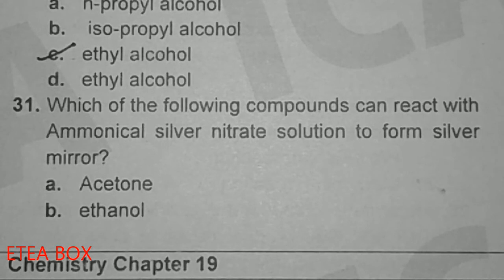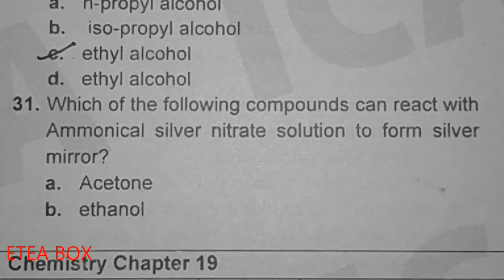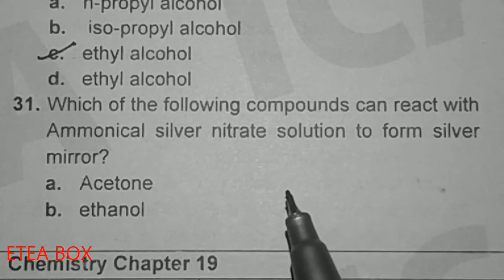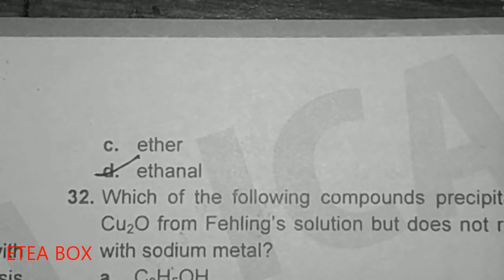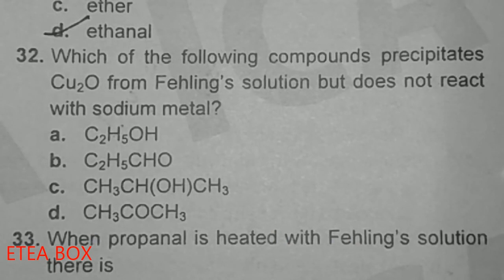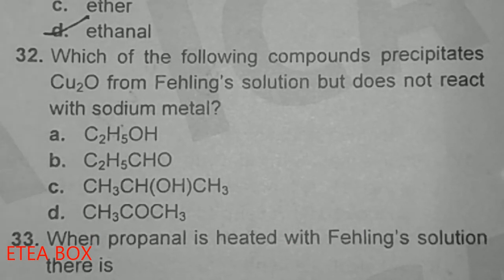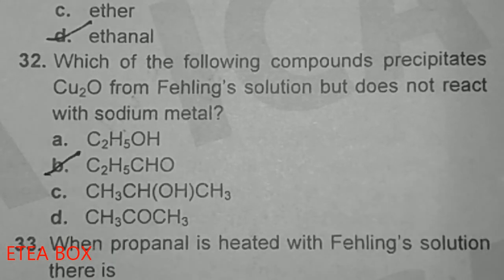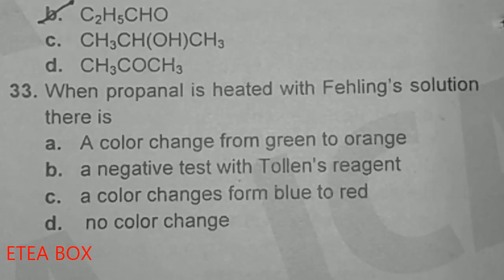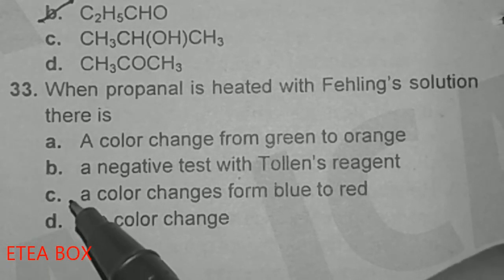Which compound reacts with ammoniacal silver nitrate solution to form a silver mirror? Aldehydes react with ammoniacal silver nitrate (Tollens' reagent); option D — ethanol — is correct here. Which compound precipitates Cu₂O from Fehling's solution but does not react with sodium metal? The compound that precipitates Cu₂O from Fehling's solution is an aldehyde; option B is correct. When propanol is heated with Fehling's solution, there is a color change from blue to red.